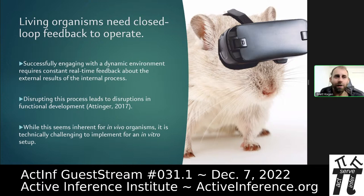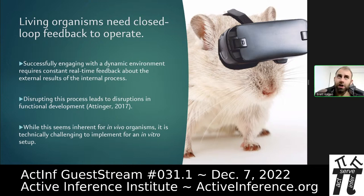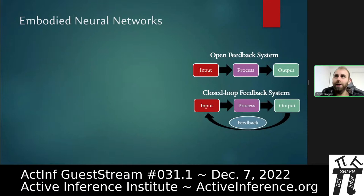They found that if they disconnected the mouse's movement during development from the actual visual feedback it received, it led to quite catastrophic developmental functional impairments. This shows how incredibly important the link with our environment is for organisms to develop. So if you're looking at cells in a dish and want to elicit intelligence, you immediately need some sort of linkage — some embodiment — achieved through a closed-loop system.